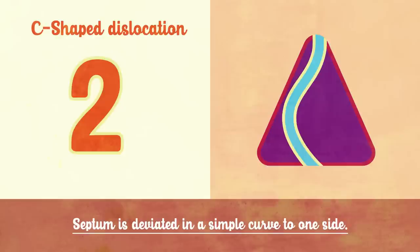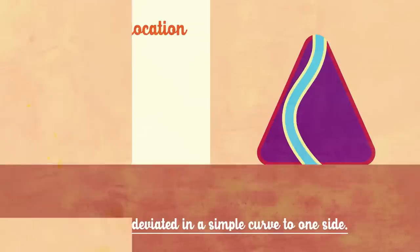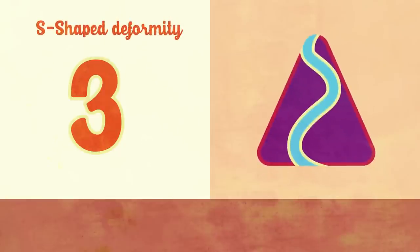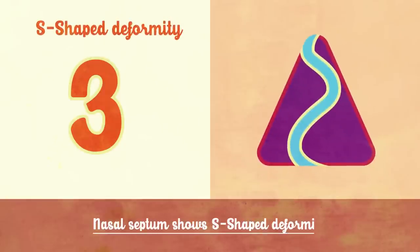In C-shaped dislocation, compensatory hypertrophy of turbinates occurs on the other side. The third type is S-shaped deformity, where the nasal septum shows an S-shaped deformity, resulting in bilateral nasal obstruction.